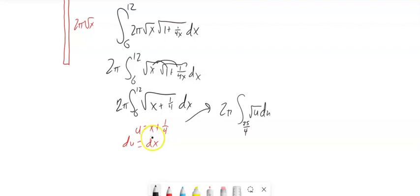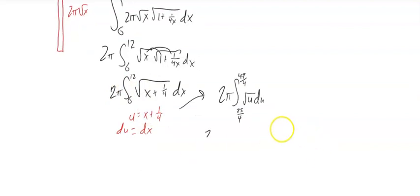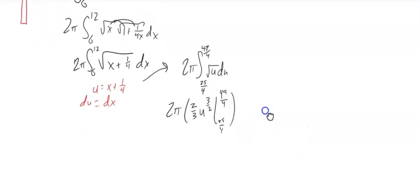All right. So I've got 2π integral of this. Might as well pull that 2/3 out. It's going to give me 4π over 3. Then u to the 3/2 evaluated from 25/4 to 49/4. 4 to the 3/2, square root of 4 is 2, 2 cubed is 8. So these denominators are 8.